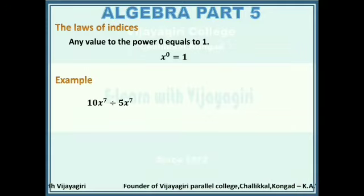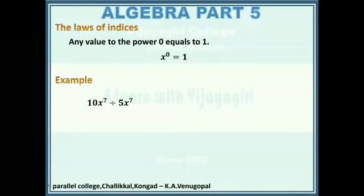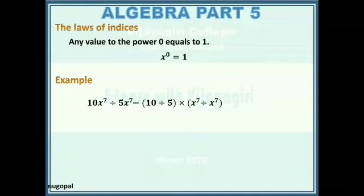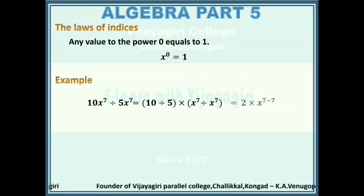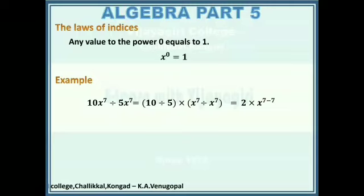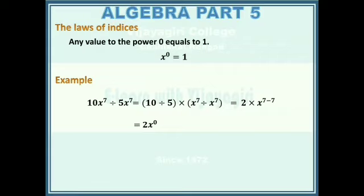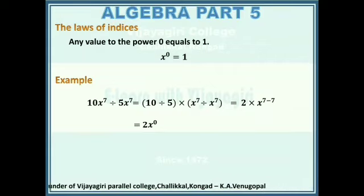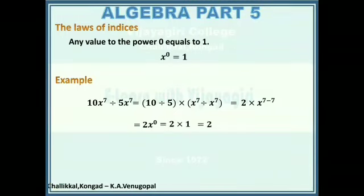Let's see an example: 10x to the power 7 divided by 5x to the power 7. It can be written as 10 divided by 5 into x to the power 7 divided by x to the power 7. 10 divided by 5 is 2, and x to the power 7 divided by x to the power 7 gives x to the power 7 minus 7. This equals 2x to the power 0. Since x to the power 0 is 1, we get 2 into 1, which equals 2.